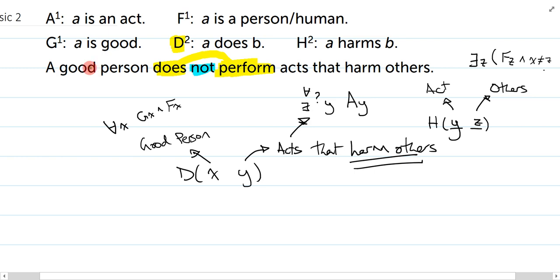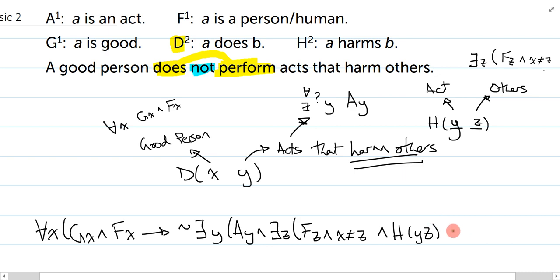And, I'm just going to go straight across. A good person does not perform acts that harm others. So, for anything, if you're a good person, if you're good and you're a person, then, how do I say it does not perform acts that harm others? I could say there isn't an act that harms others that you perform. That is one way of doing it. Let's try it. So, it's not the case that there exists an act and that act harms others. Oops. I can't say that yet. I want to say that acts harm others. But, before I say that, I actually need to introduce others. And, Z is an other. And, the act harms another. And, now I want to say, and, the good person does the act. Count all the brackets and close them all.